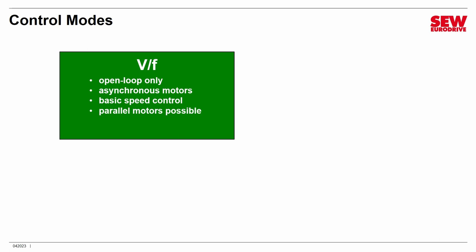Under the right conditions, you can even run multiple motors in parallel if they're about the same size and have the same electrical qualities. VF mode is sort of the baseline — it's not used very much because there are better modes, but there are times it's necessary, and MoVC control cabinet products do support it.